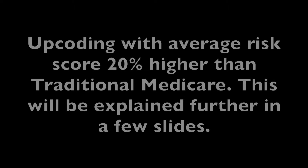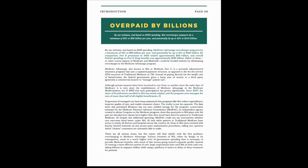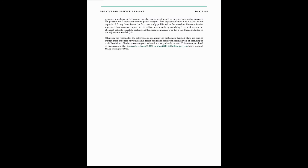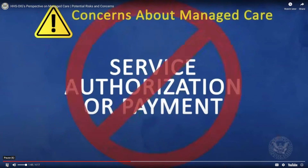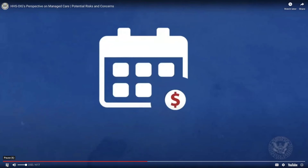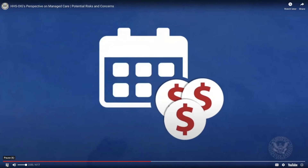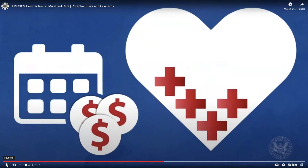This paper also talks about upcoding, with the average risk score 20% higher than traditional Medicare. OIG work has found that some plans inappropriately deny authorizations for services or deny payments for services. This is called stinting on care, and these inappropriate denials can interfere with your timely access to necessary health care services. Also, Medicare will increase the fixed monthly payment when plans provide coverage for enrollees who may be sicker than expected — these are called risk adjustment payments.